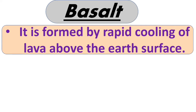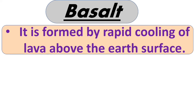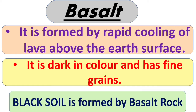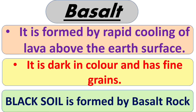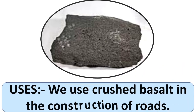Next is basalt. It is formed by rapid cooling of lava above the earth's surface. It is dark in color and has fine grains. Please note this important point: black soil is formed from basalt rock. Basalt is also used in the construction of roads.